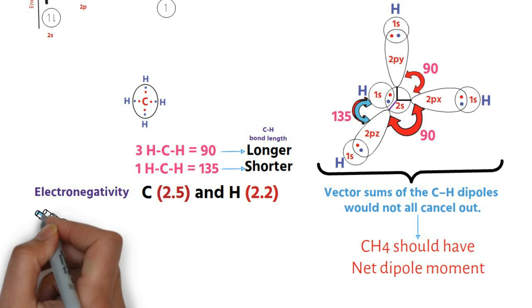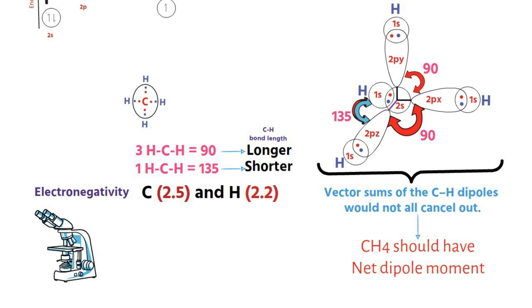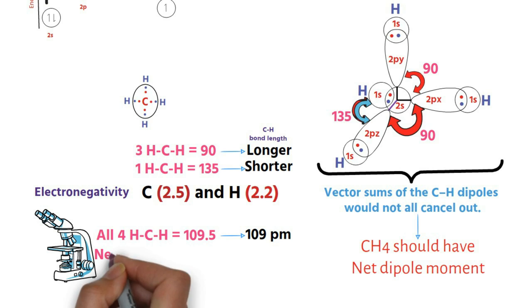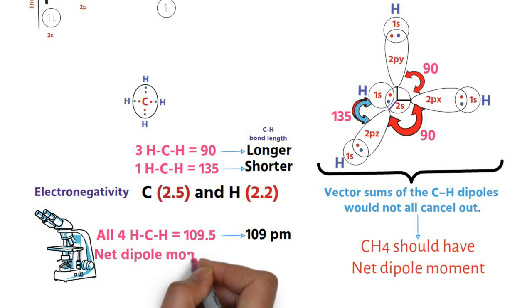However, experimentally, the four bonds are found to be equivalent. All HCH bond angles found to be 109.5 degrees and CH bond length 109 pm. And the net dipole moment is found to be zero, contrary to what is expected, hinting that this can't be the structure of methane.